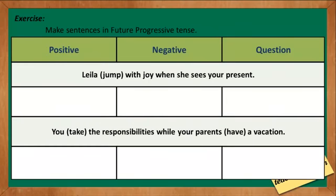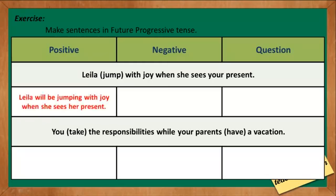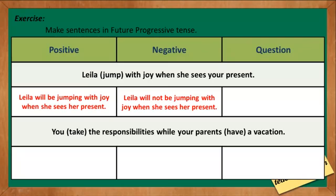For our exercise, make sentences in future progressive tense. The first one: 'Layla jumped with joy when she sees her present.' The correct positive statement should be: 'Layla will be jumping with joy when she sees her present.' The correct negative sentence is: 'Layla will not be jumping with joy when she sees her present.' And the question is: 'Will Layla be jumping with joy when she sees her present?'